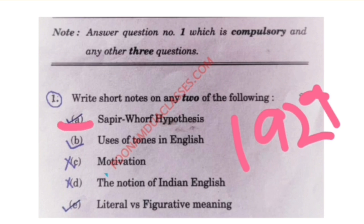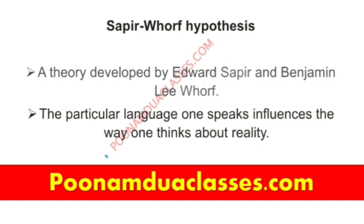The theory, developed in 1929 by Edward Sapir and Benjamin Lee Whorf, is also known as the linguistic relativity hypothesis. It refers to the proposal that the particular language one speaks influences the way one thinks. The language we speak influences our thought processes and our realities. The particular language one speaks influences the way one thinks about reality.